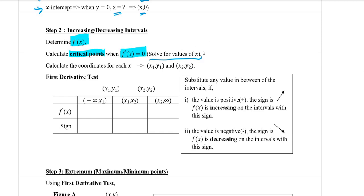When you solve for values of x, you will have one, two, or three values of x. For example, you have x1 and x2. For each x, we can also plot it in terms of coordinates. Therefore, you need to calculate for each y — that means for x1, calculate y1; for x2, calculate y2. How do we calculate the value of y? Substitute into f(x).